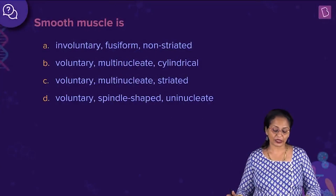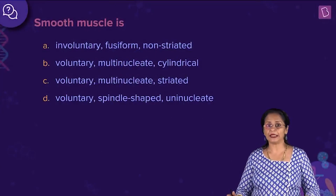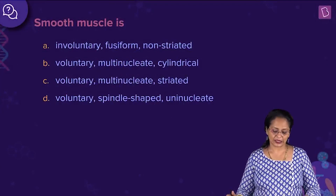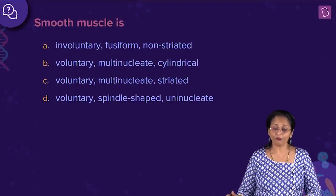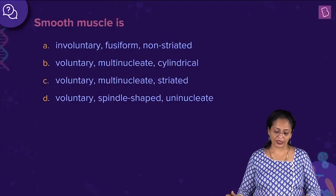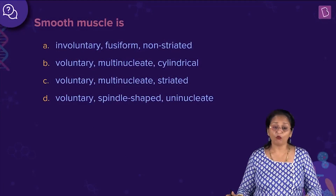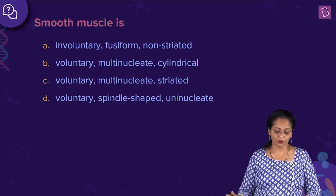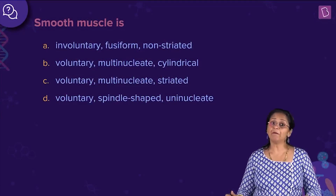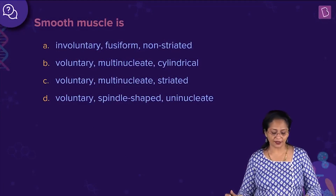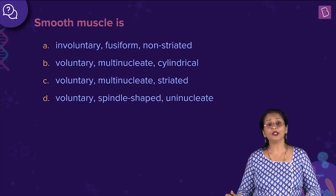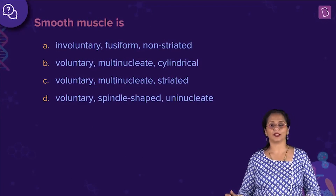Let us now look at this question — you need to complete this sentence: Smooth muscle is (A) involuntary, fusiform, non-striated; (B) voluntary, multinucleate, cylindrical; (C) voluntary, multinucleate, striated; or (D) voluntary, spindle-shaped, uninucleate.